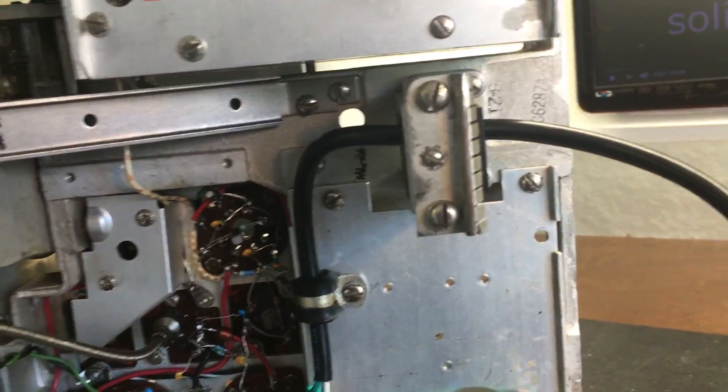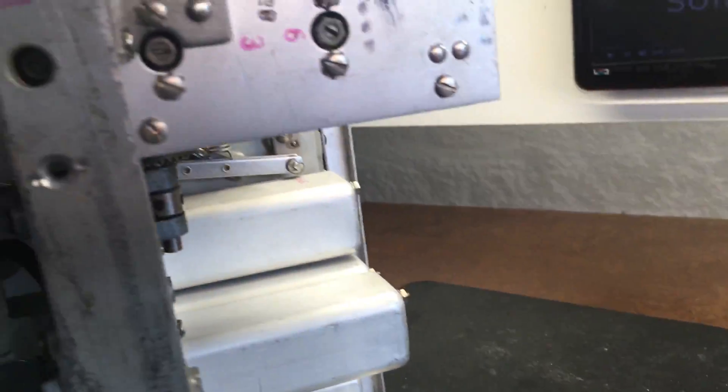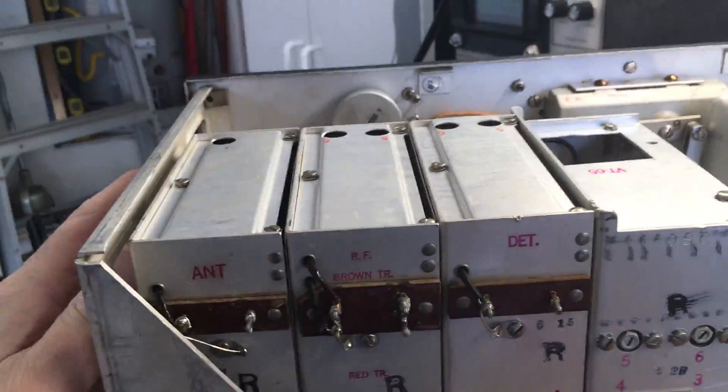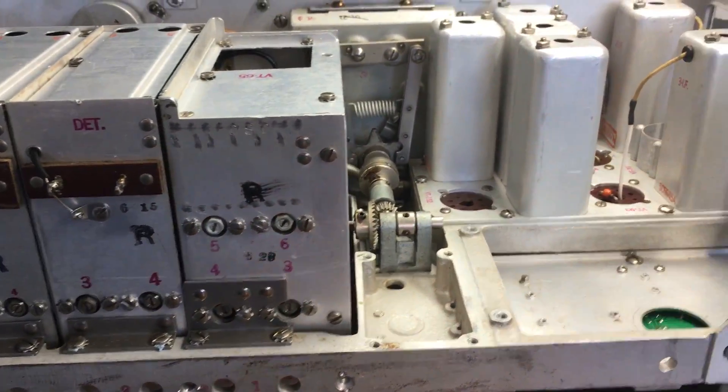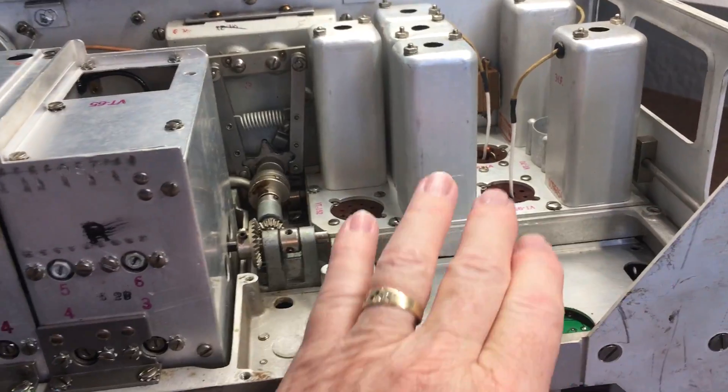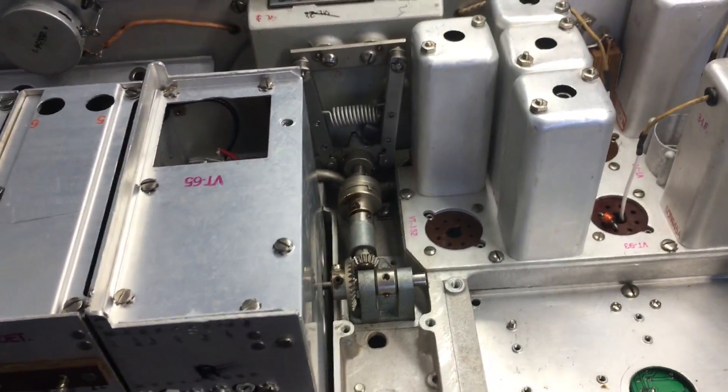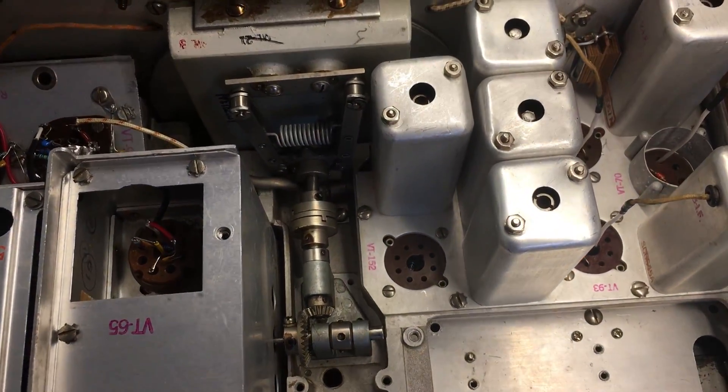So let's turn around and take a look at the other side here. Okay, let's see if we can do this without dropping it. Okay, the other side shows the back of the tuning units, and then of course, this is where the old dynamotor used to go. So let's take a look from this side here.